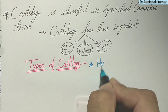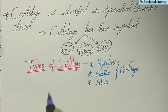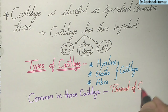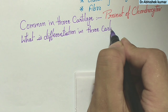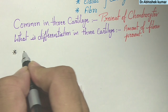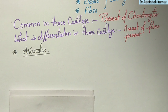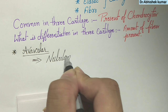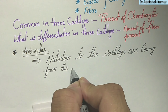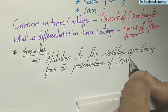There are three types of cartilage: hyaline, elastic, and fibrocartilage. What is common in these three cartilages is the presence of chondrocytes. What differentiates them are the type and amount of fibers present. Cartilages are avascular — if there is no blood supply, how are they getting their nutrition? They get their nutrition from the perichondrium of the cartilage.